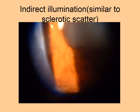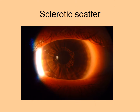This method of illumination is very similar to sclerotic scatter, where the sclera is illuminated and structures in the cornea light up. The illuminated sclera acts like a light source, the cornea acts like a fiber optic light guide and transmits light to the sclera on the other side. The cornea itself will not be illuminated unless there is an opacity within the cornea which redirects light towards the observer.